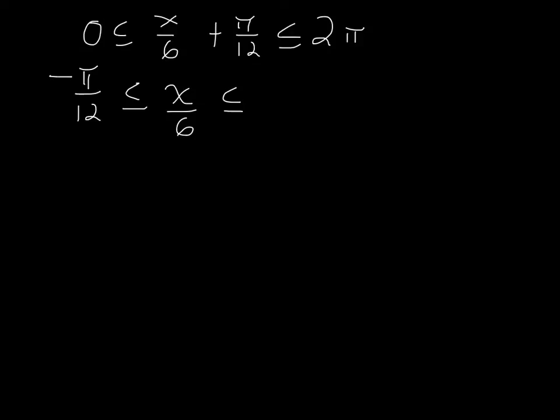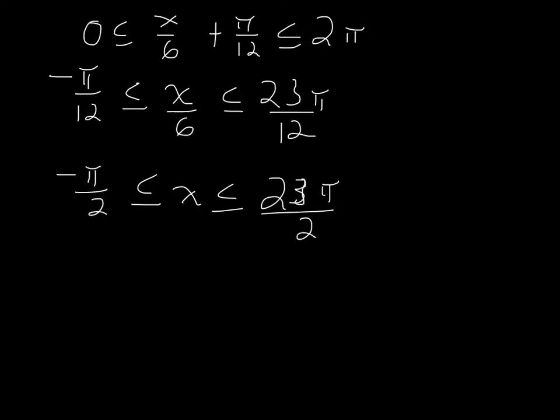And then I have 24π over 12 minus π over 12, so that's 23π over 12. Then I'm going to multiply both sides by 6. So I'm going to have negative π over 2 and 23π over 2. And this is, of course, my domain for one period.